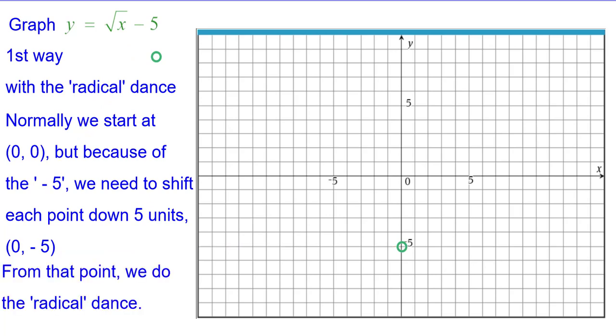From that point we do the radical dance. That's right 1 up 1 because the square root of 1 is 1. Right 4 up 2 because the square root of 4 is 2 from that point. And right 9 up 3 because the square root of 9 is 3.